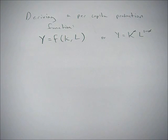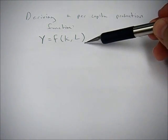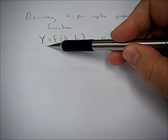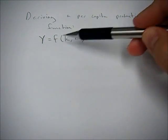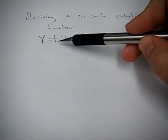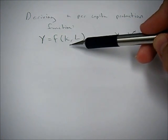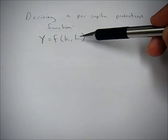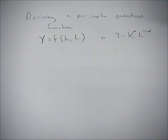This video is going to go through the algebra of getting a per capita production function. You start out here with the general form — y as a function of k and l, where y is production, f is your function, k is capital, and l is labor.